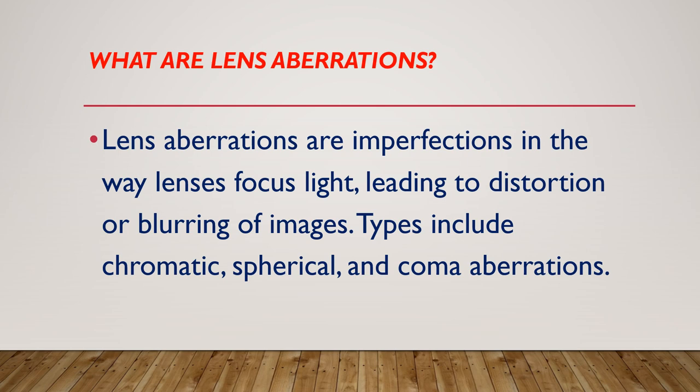What are lens aberrations? Lens aberrations are imperfections in the way lenses focus light, leading to distortion or blurring of images. Types include chromatic, spherical, and coma aberrations.